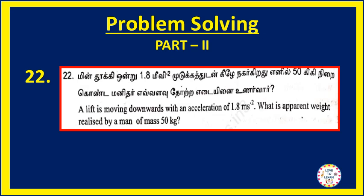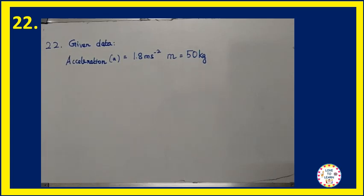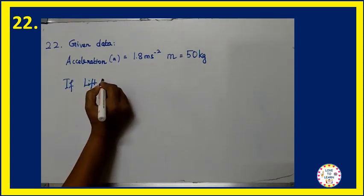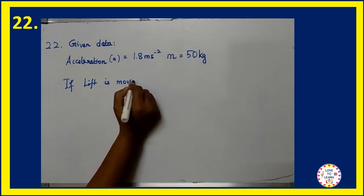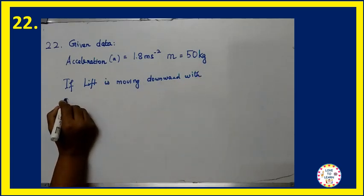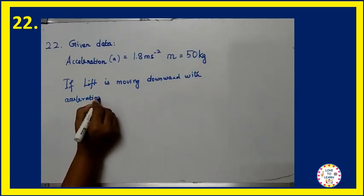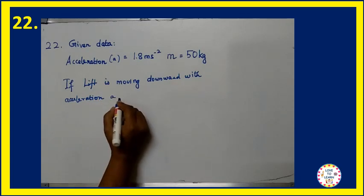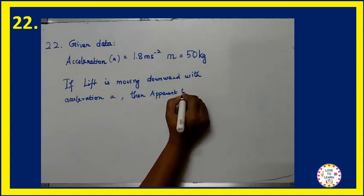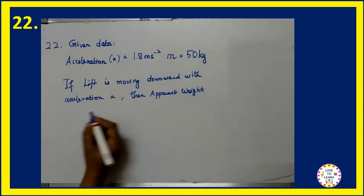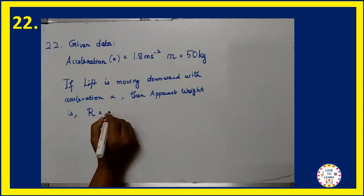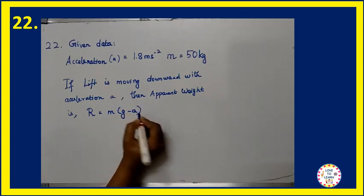Now let's move on to the solution. First, let us take the given acceleration and the mass. If the lift is moving downward with the acceleration, then the apparent weight is given by R equals mass times (g minus a).